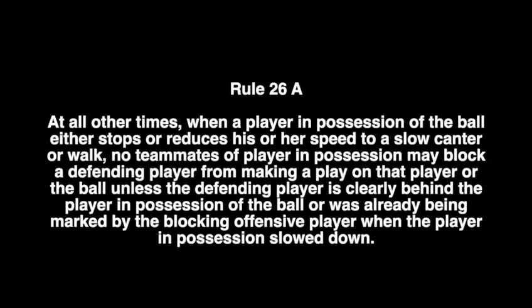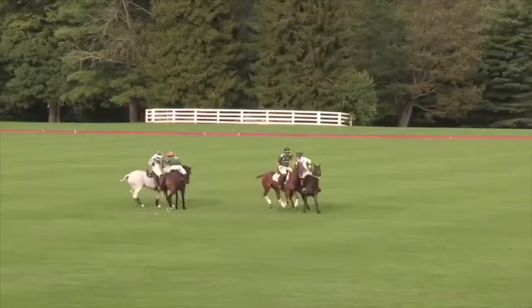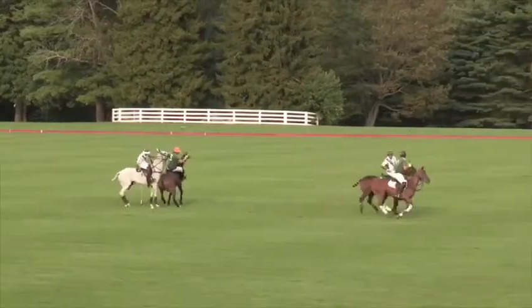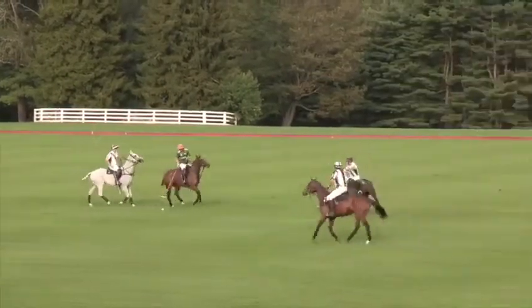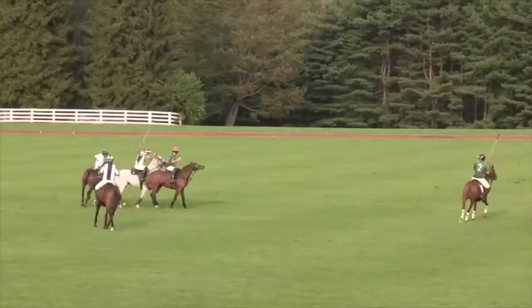This video is intended to give an explanation and some video examples of improper blocking live play. The three main points are that the player in possession stops or reduces their speed to a slow canter, and a teammate may not block a defender from making a play on that player unless they were already engaged before the slowdown, or the player is clearly behind.